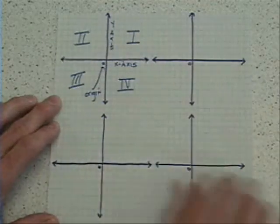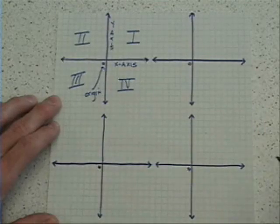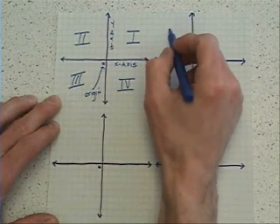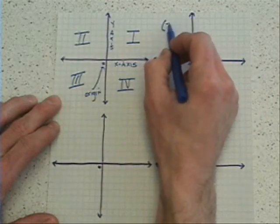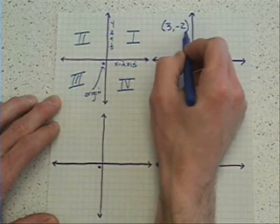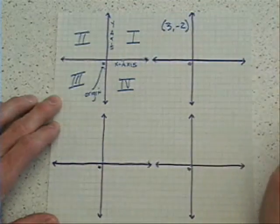Now, with all of those things defined, let's go ahead and graph a couple example points. Up here, I'm going to give you an ordered pair of three, negative two.